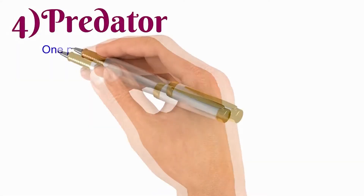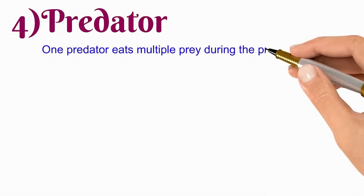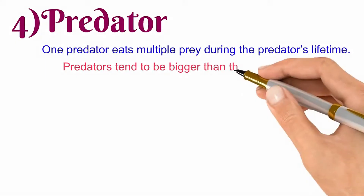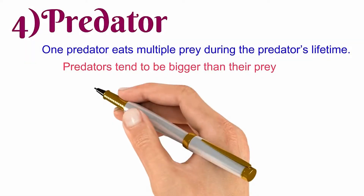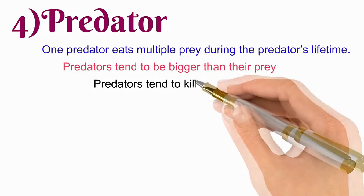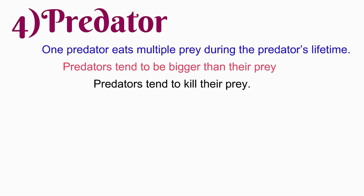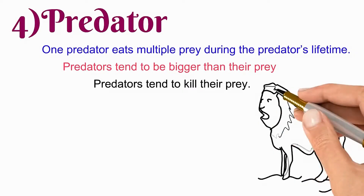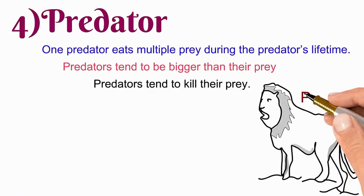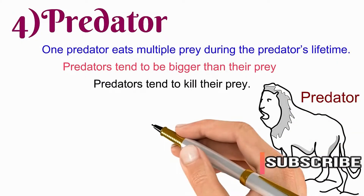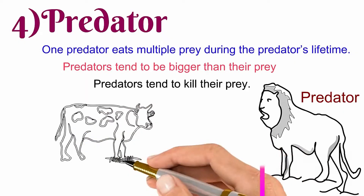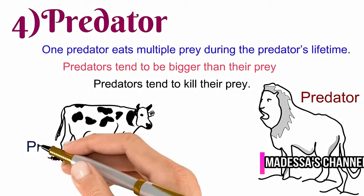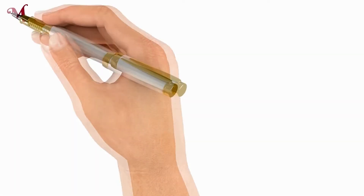Now we have the predator. Everybody is familiar with the predator — we have learned it from early classes. One predator eats multiple prey during its lifetime, predators tend to be bigger than their prey, and predators tend to kill their prey. These are the three key points a predator has. For example, if a lion in the forest eats a cow, then the cow is the prey and the lion is the predator.